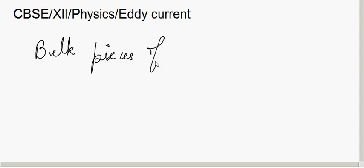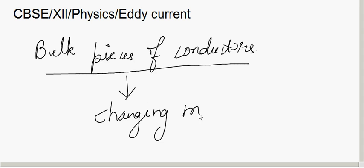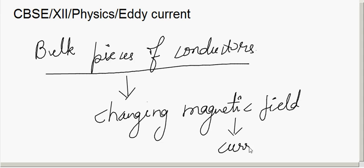Good morning. In today's session we will learn about eddy currents. The first question is: what is an eddy current? These are currents which get induced in bulk pieces of conductors. An example of a bulk piece of conductor is the core of a transformer. When these bulk pieces of conductors are subjected to a changing magnetic field or changing magnetic flux, a current gets induced in them.